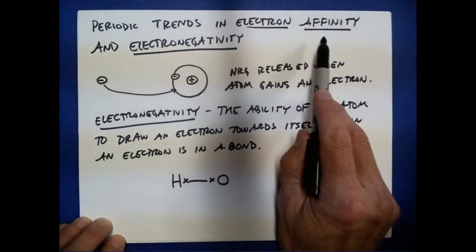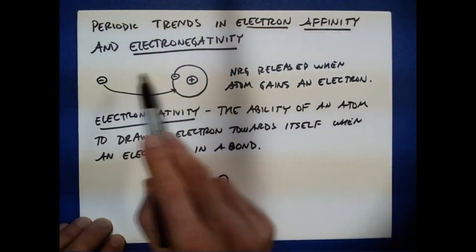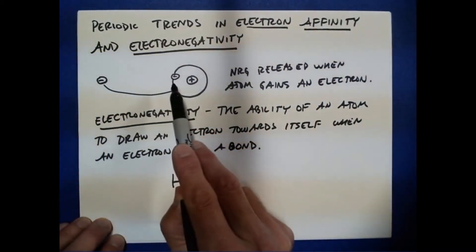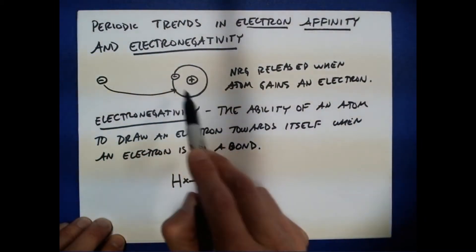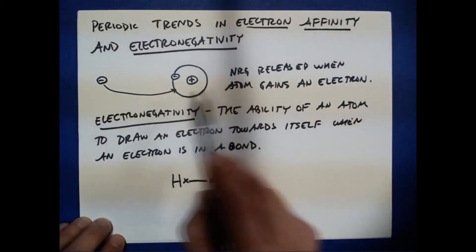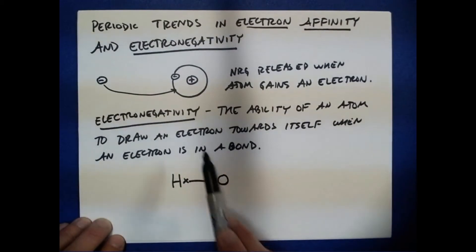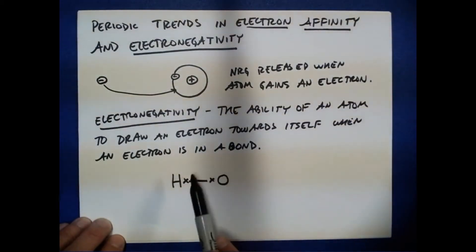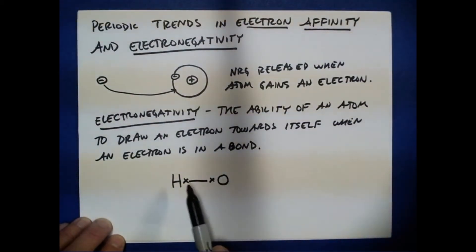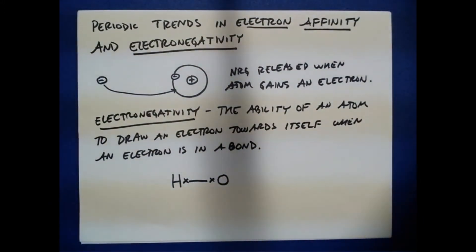Because oxygen has a greater ability to draw electrons to it than hydrogen, we say oxygen has a greater electronegativity than hydrogen. To recap: electron affinity describes how well a singular atom draws an electron to itself, measured as the energy released when the atom gains an electron. Electronegativity refers to electrons in a bond and how well an atom draws those electrons to itself when in a bond.